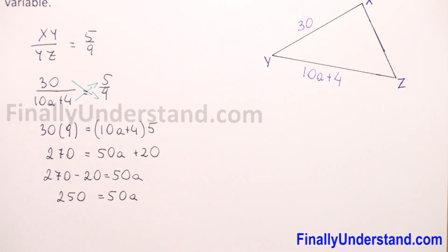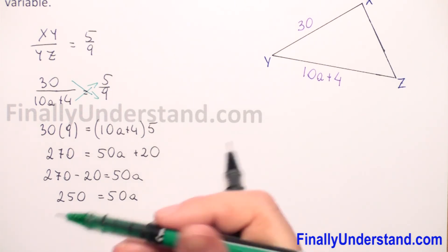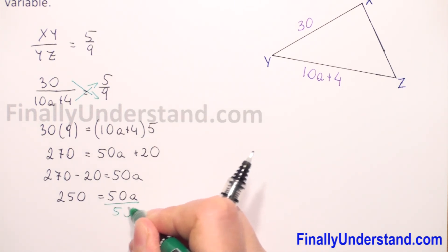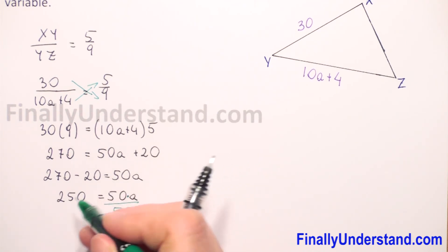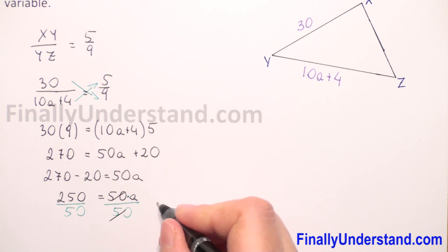Now we need to find a, so I will divide both sides by 50, because we have multiplication on the right side. So 50 and 50 we can reduce,